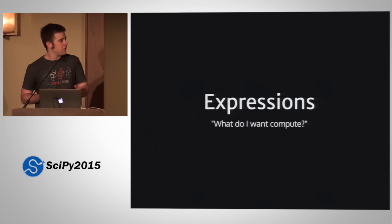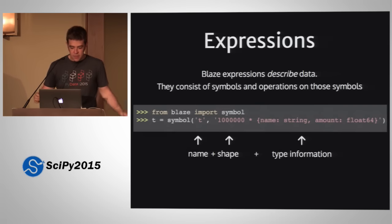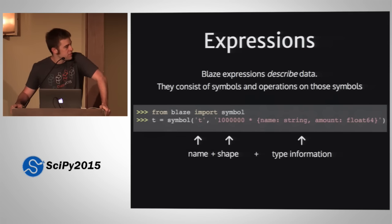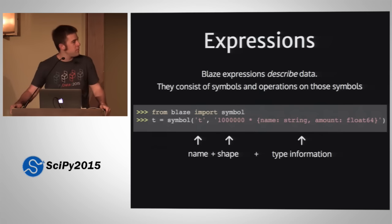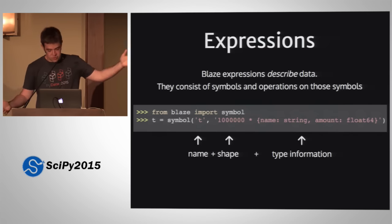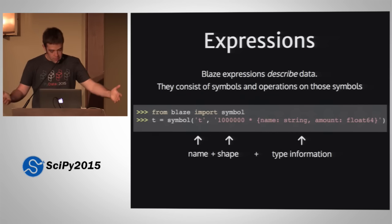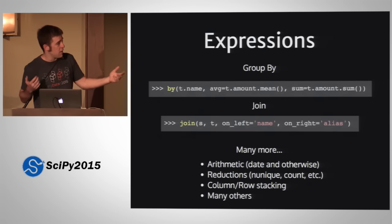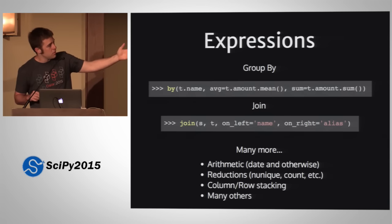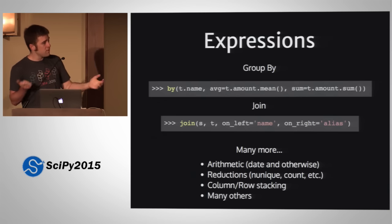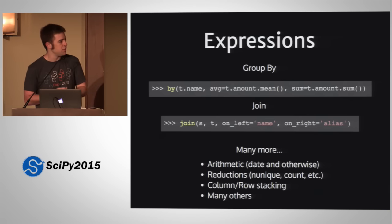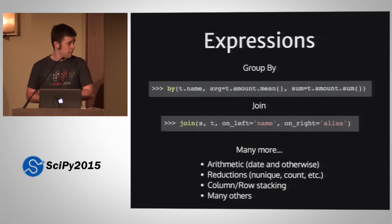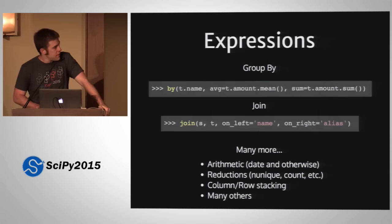Let's dig into more details about each component. Expressions say what you want to compute, and they consist of things like a name, a shape, and type information. In this case, I'm making a 1 million row table with two columns — name is a string column and amount is a float64 column, and I'm calling it T. You can build up things on these expressions and nothing is actually happening except you're tracking the type and name of operations. So you can build up a group by, do a join, arithmetic, date operations, reductions. We take a lot of API from pandas — things like column and row stacking expressions, isIn, and more.